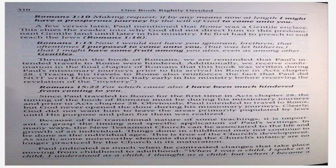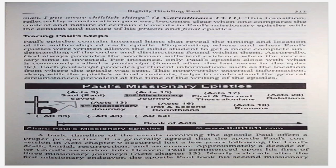When I was a child, I spake as a child, I understood as a child, I thought as a child. But when I became a man, I put away childish things — 1 Corinthians 13:11. This transition reflected by a maturation process becomes clear when one compares the content and nature of certain epistles — Paul's missionary epistles with the content and nature of his prison and final epistles. Tracing Paul's steps: Paul's epistles contain internal hints that reveal the timing and location of the authorship of each epistle. Pinpointing where and when Paul's epistles were written allows the Bible student to get a more complete understanding of the order and distinctions found within them.